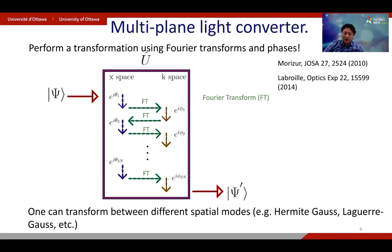Another platform to make a unitary transformation is the one of a multi-plane light converter. Here the idea is to use phases and Fourier transforms. So you apply phases in X-space, followed by phases in K-space, and in between there is a Fourier transform. So you repeat that over and over, and Morizur, in this set of papers, showed that that is enough to perform any unitary transformation. And they also perform that experimentally by changing spatial modes.